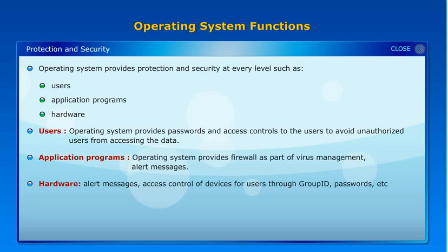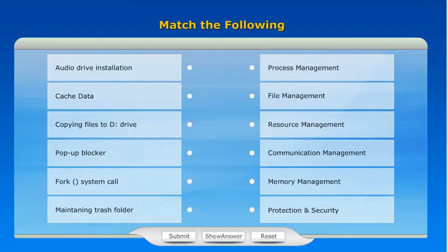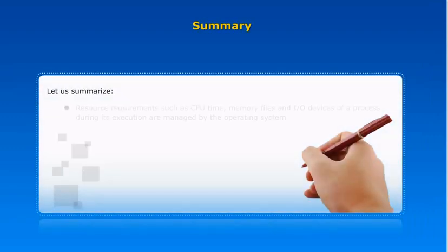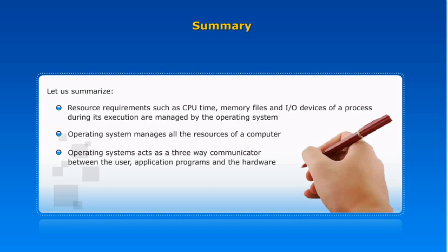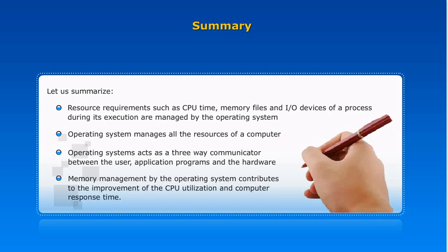Summary: At the end of this topic, you have learnt that resource requirements such as CPU time, memory, files, and I/O devices of a process during its execution are managed by the operating system. The operating system manages all resources of a computer and acts as a three-way communicator between the user, application programs, and the hardware. Memory management by the operating system contributes to the improvement of CPU utilization and computer response time.